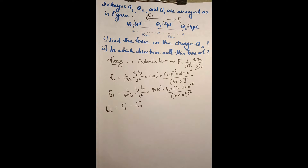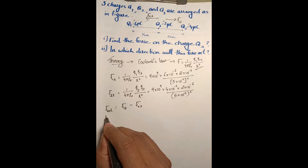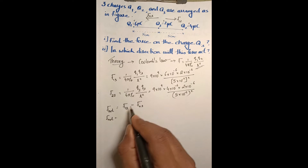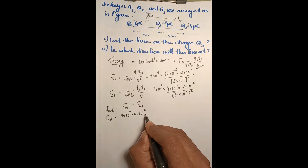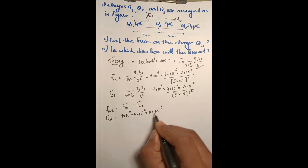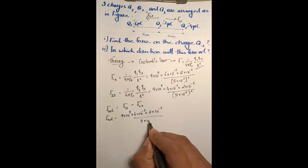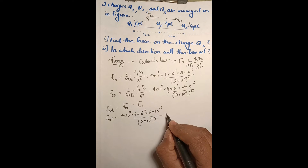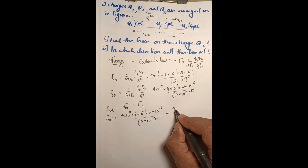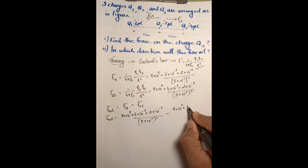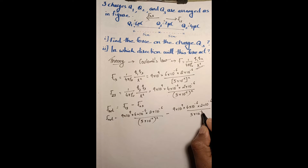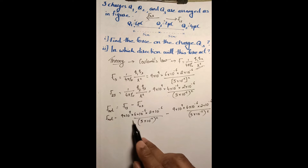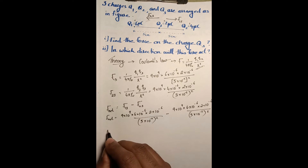Substituting values: F-net equals 9 times 10 to the 9 times 6 times 10 to the minus 6 times 2 times 10 to the minus 6, divided by 5 times 10 to the minus 2 squared, minus 9 times 10 to the 9 times 4 times 10 to the minus 6 times 2 times 10 to the minus 6, divided by 5 times 10 to the minus 2 squared. There are many common terms in these two values, so we will factor them out.